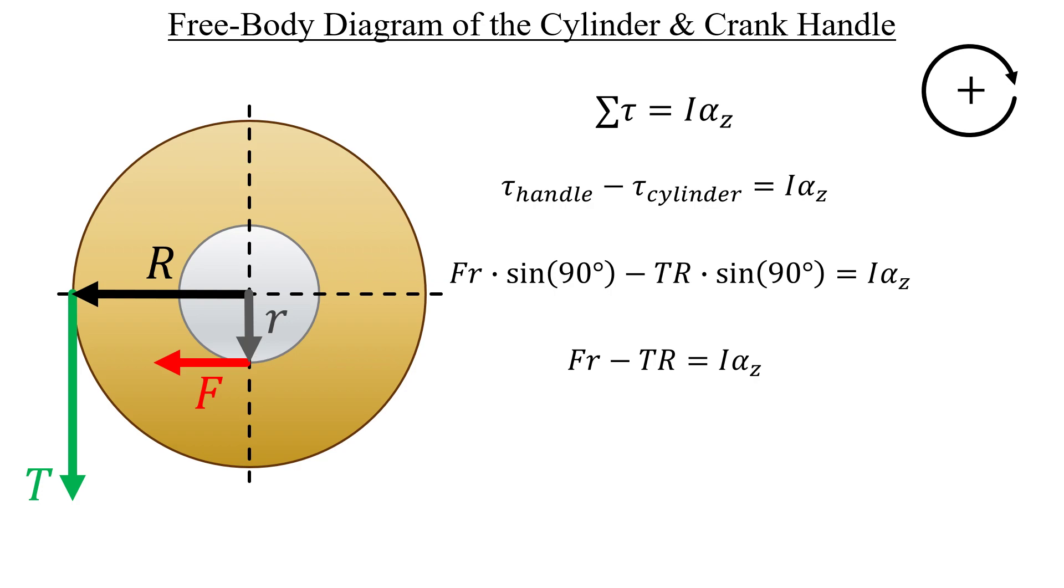At this point, we have an equation that contains two unknowns, F and alpha. It might seem like we're stuck since we weren't told anything about the angular acceleration, but check this out. The linear acceleration of the crate depends on how fast the cylinder rotates, which means we can use the following equation that relates those two quantities.